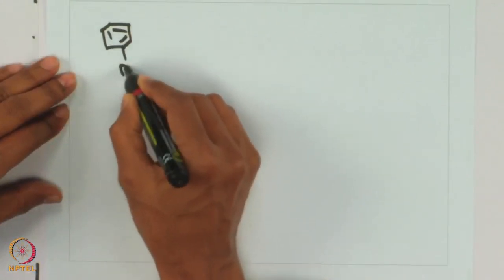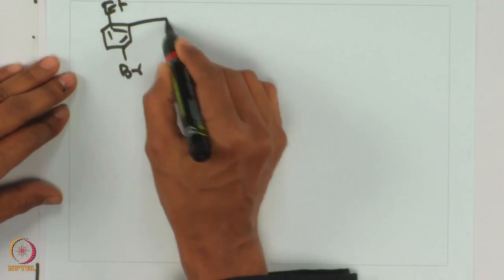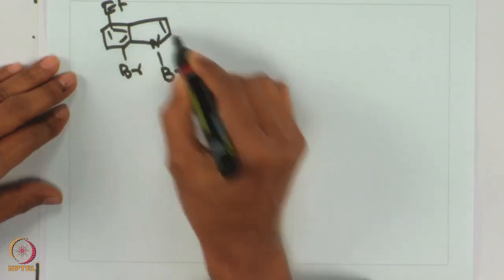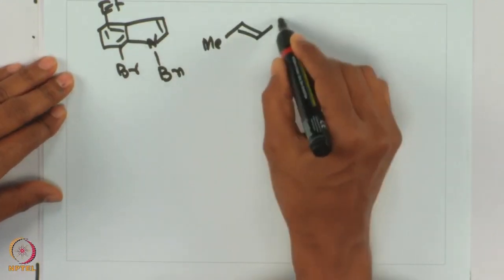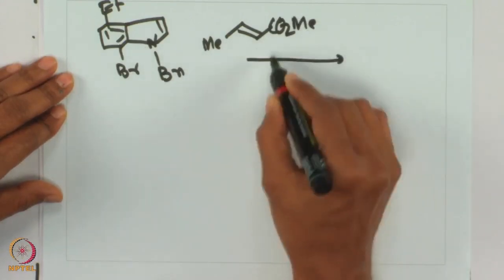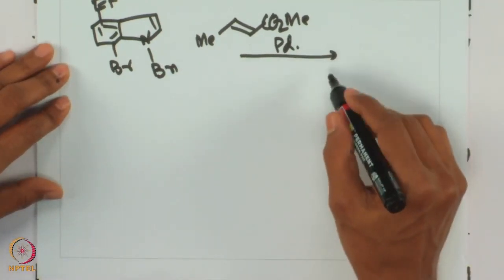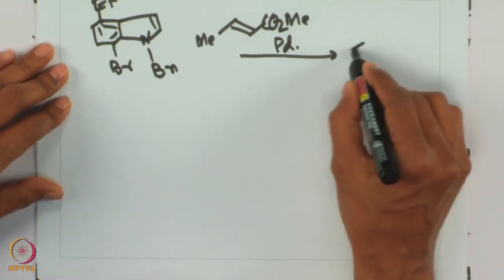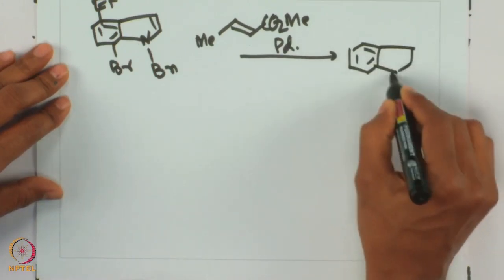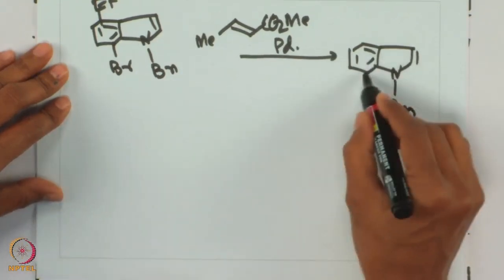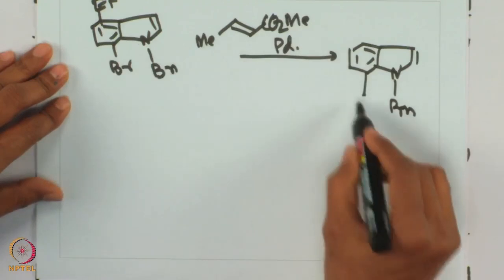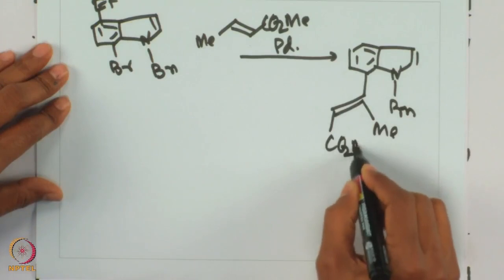Let us look at an example where a heterocycle is involved and a disubstituted olefin is reacted. With a heterocycle such as indole, one would say the reaction gets perturbed because heteroatoms are usually problematic for metal-containing reactions. But HEC reaction is such a mild reaction that it works using catalytic palladium acetate, orthotolyl phosphine, triethylamine as base, and acetonitrile as solvent at 115°C. The product retains N-benzyl, and methyl and CO2Me are trans to each other.